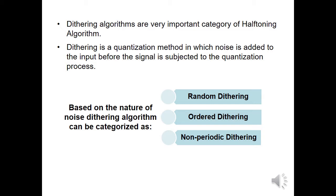There is an important term: dithering. Dithering algorithms are a very important category of halftoning algorithms. Dithering is a quantization method in which noise is added to the input before the signal is subjected to the quantization process. The process of adding noise to the signal and using a fixed threshold is equivalent to adding noise to the threshold. Based on the nature of noise, three types of dithering algorithms are possible: random dithering, ordered dithering, and non-periodic dithering.